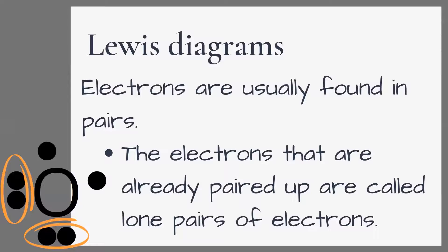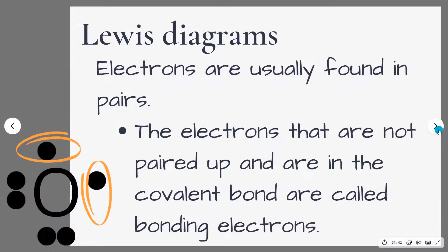There are a few keywords you'll hear quite often, especially in your textbooks. Electrons are usually found in pairs because it makes the atom more stable. The electrons that are already paired up — with two electrons in each area — are called lone pairs of electrons. Those that are not yet paired up, our single electrons with only one electron in each area, are called bonding electrons because they are going to be used in covalent bonds.